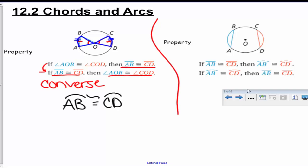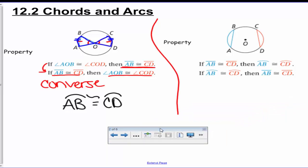Let's look at the second property here. Now it says if you have these chords AB and CD, if they're congruent, then their arcs AB and CD are going to be congruent also. And once again, the converse applies. So if you have the arcs congruent, then you know the chords are congruent.